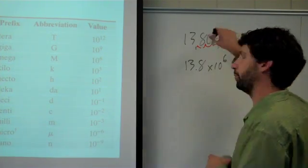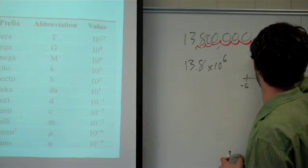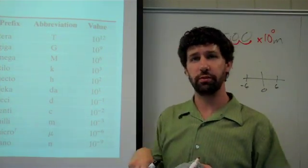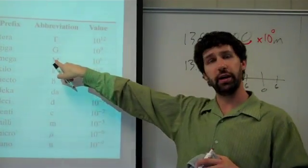So this is... we should have had a unit to begin with. Let's just say that this is meters to begin with. So we have 10 to the sixth meters, 13.8 times 10 to the sixth meters. 10 to the sixth is mega. So we're simply going to replace this with mega, and we have 13.8 megameters.